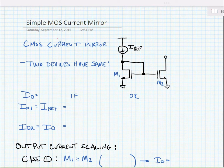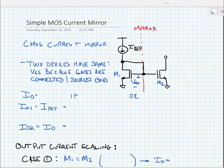Here is a simple CMOS current mirror. We call it a current mirror because there's a mirror symmetry between the two devices in the circuit. And we note that the two devices have the same VGS. This is because the gates are connected together and the sources are at ground.